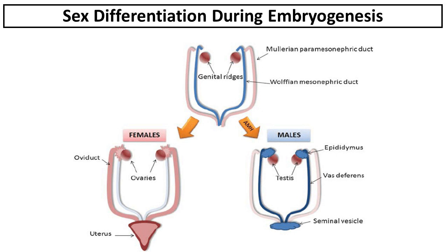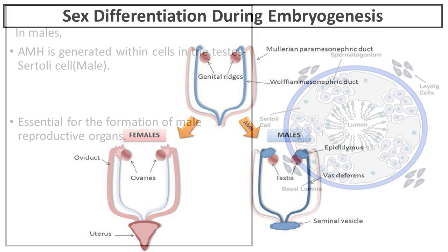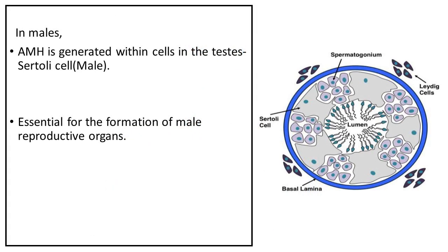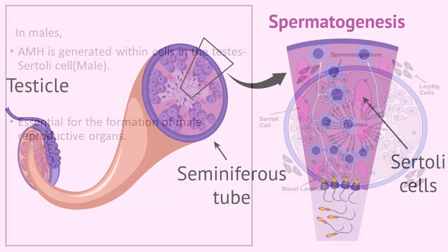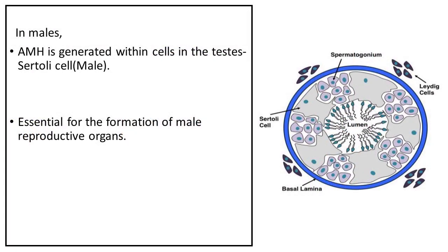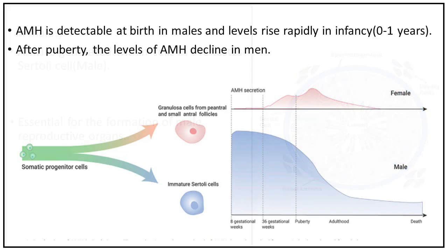As a result, the Müllerian duct breaks down in males. In females, who do not produce the AMH protein during fetal development, the Müllerian duct becomes the uterus and fallopian tubes. In males, AMH is generated within cells in the testes called Sertoli cells. AMH hormone is very important during the development of the male fetus, as it is essential for the formation of male reproductive organs. AMH is detectable at birth in males.